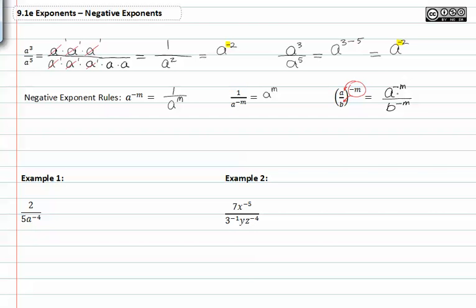When we do this, notice we could rewrite those as positives by bringing this to the numerator and this to the denominator. So, we can rewrite this as b to the positive m over a to the positive m. Notice I moved my bases down for a and my base up for b and changed the sign of my exponents.